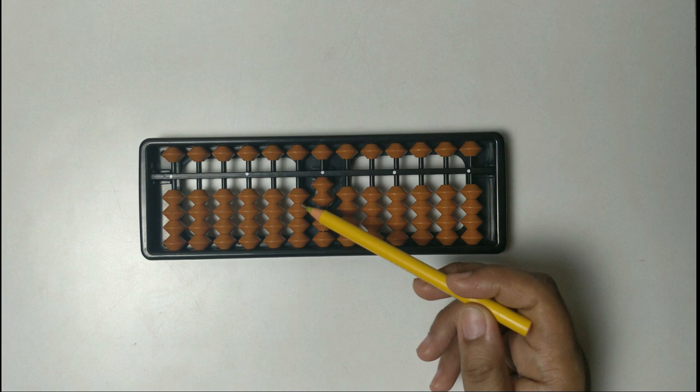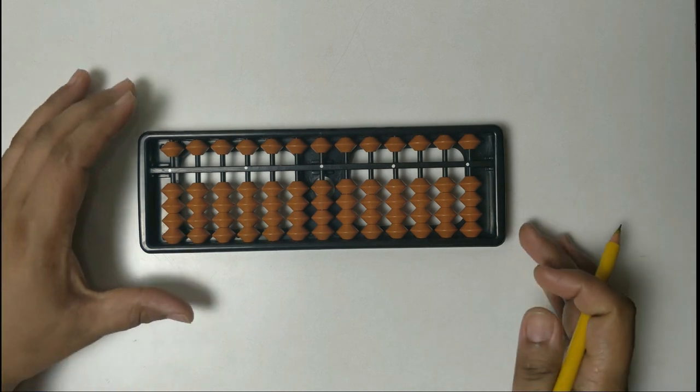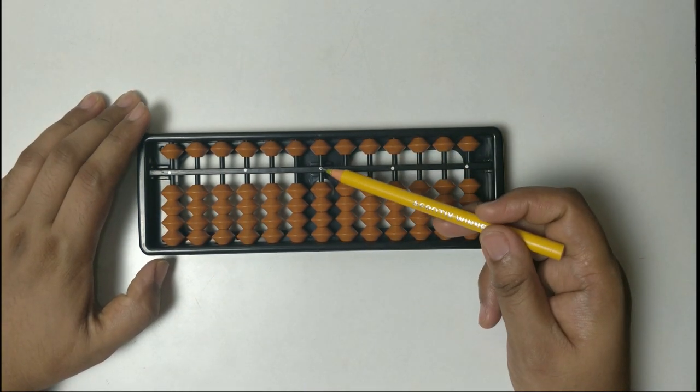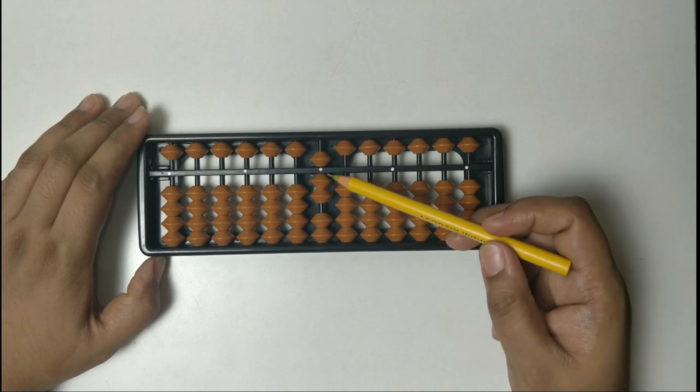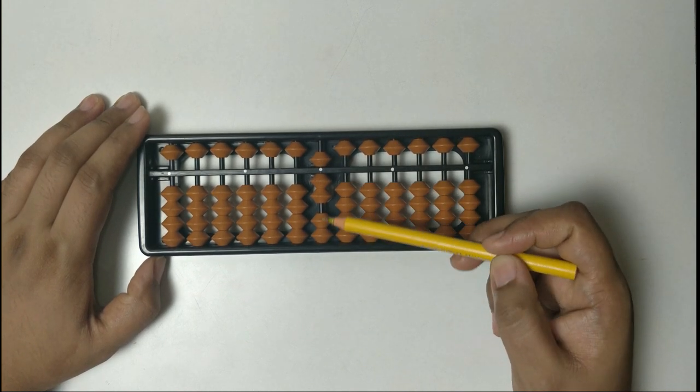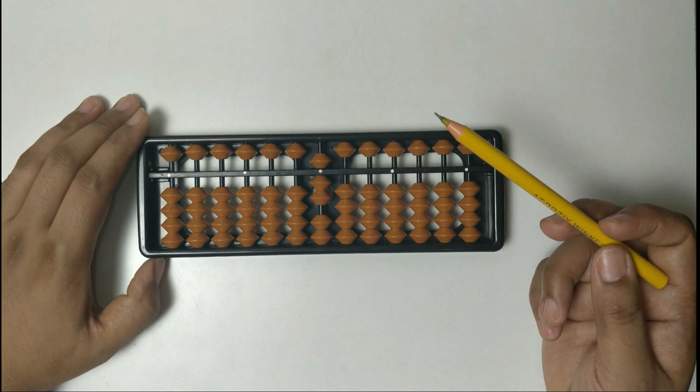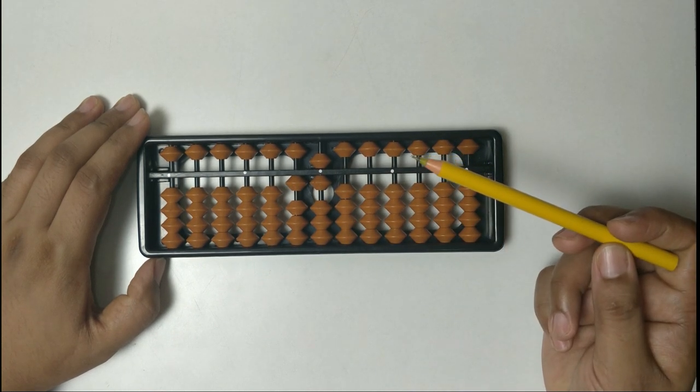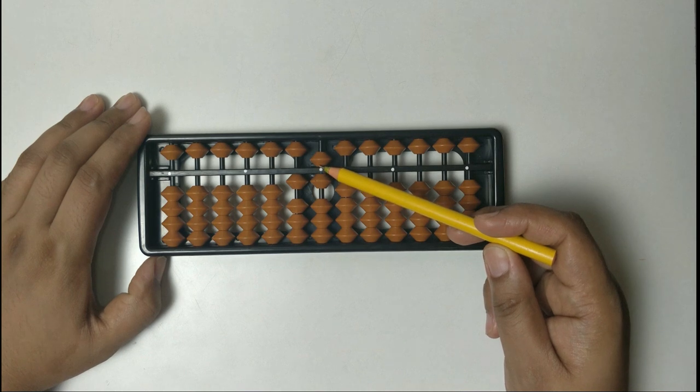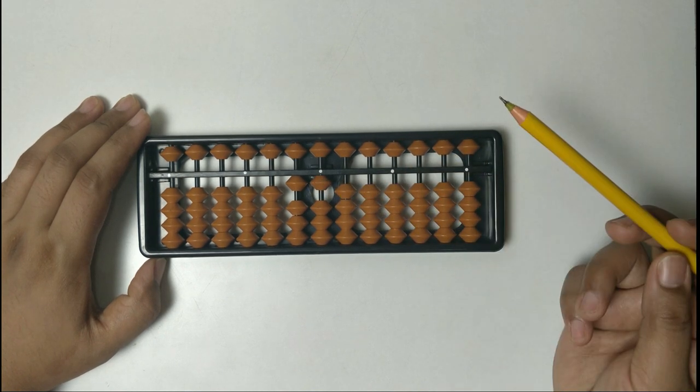For example, we need to solve 7 plus 9 minus 5. So let's start: 7, we go to the unit place, 5, 6, 7. Plus 9, can we get 9 on this row? No. So how can we do this? 9 plus 1 is equal to 10, so plus 9 is equal to 10 minus 1. Then minus 5, we take away the bead having value of 5. So what is the answer? 10, 1, 11. This arrangement of beads is representing the number 11.